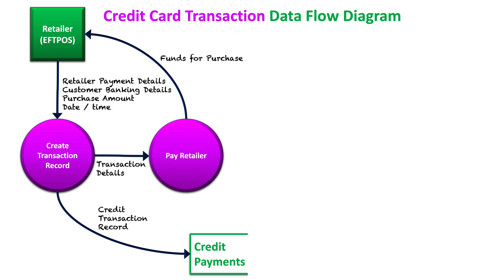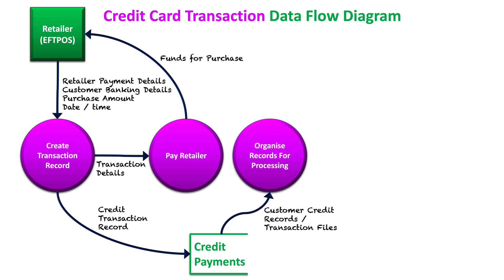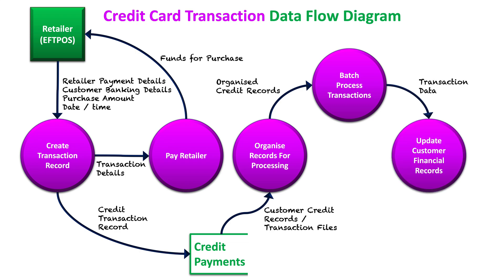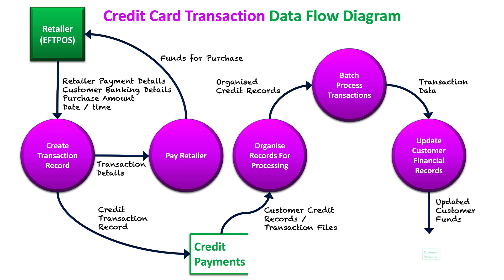But what hasn't happened yet is the movement of money out of the customer's account. At some specific point, the transaction records will be retrieved from the data store and organized for processing, linked to specific customers. The batch process is then conducted on those organized records — they may be organized by specific date and time or due dates of payments. After the batch process occurs, that transaction data is used to update the customer's financial records, deducting the amounts they were owing for their credit transactions.